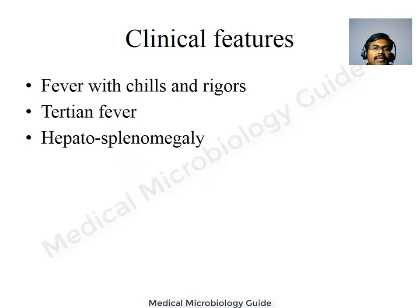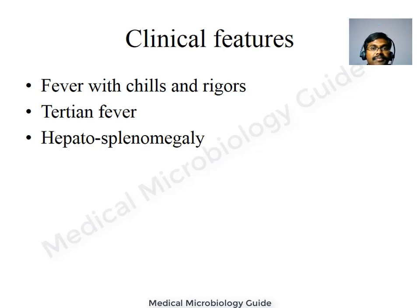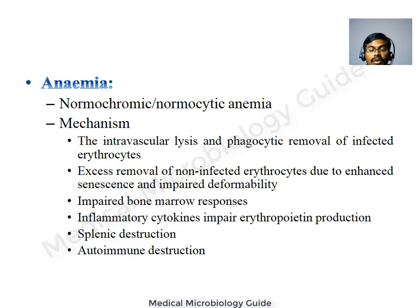Clinical features of falciparum malaria include fever with chills and rigors, followed immediately by profuse sweating. The fever pattern is tertian — occurring every 48 hours, i.e., every third day. There can also be hepatosplenomegaly.